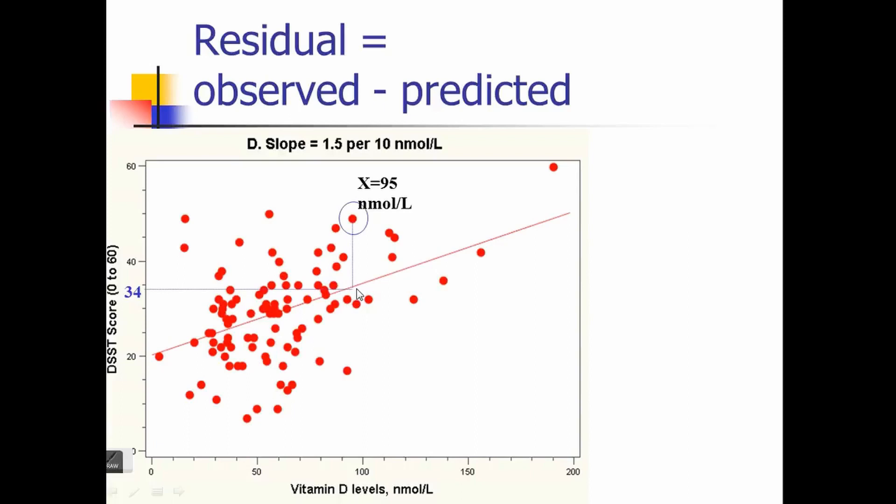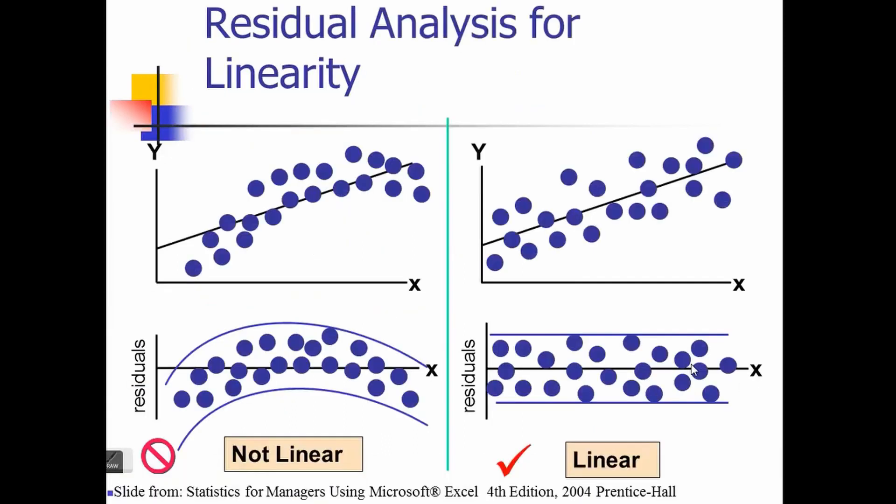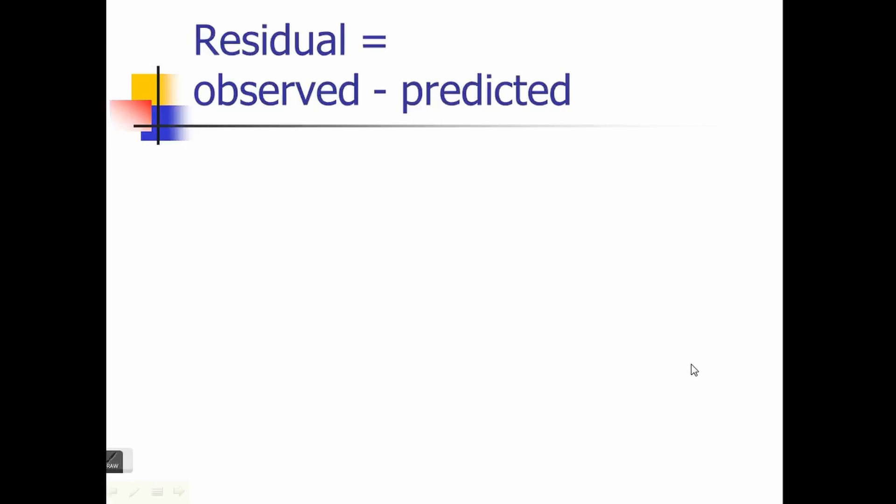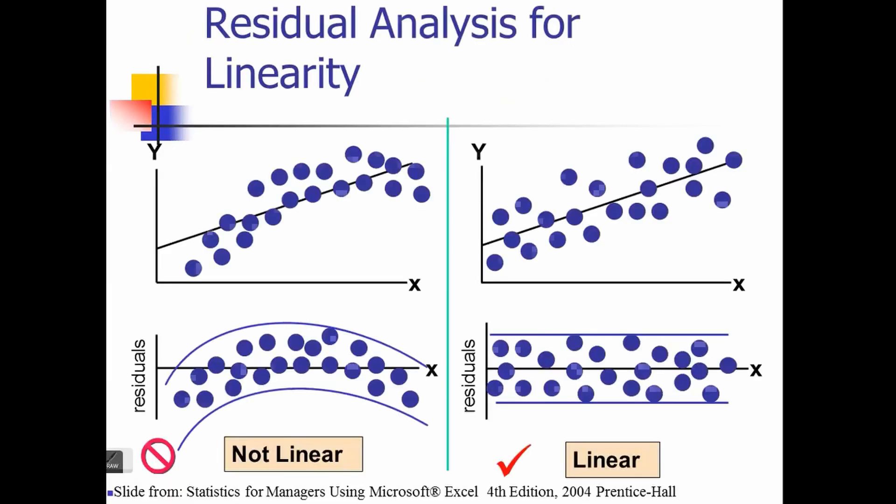Once you have the residuals, you plot them. Residuals can be really good looking, sometimes having no pattern at all. We want no pattern in the residuals. The last graph is the best one where there is no correlation, no relationship between the residuals. But the others you can see have patterns, increasing trends, smooth curvy relationships. We do not accept such residuals.